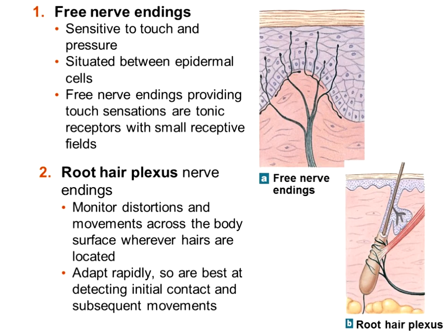We're going to go through the six different types of tactile receptors. First, there are free nerve endings — they can be pushed into the epidermis or sit mostly in the dermis. They provide sensation with small receptive fields and tonic, slow-adapting changes.